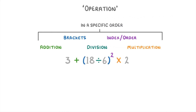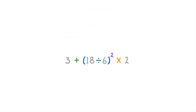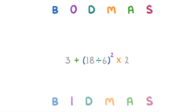To help us remember this order, we can use something called BODMAS or BIDMAS, which are both exactly the same except for the second letter, which can be an O or an I depending on which one you've learned. Each letter stands for a different operation, and the order of the letters tells us the order in which we should do the operations.